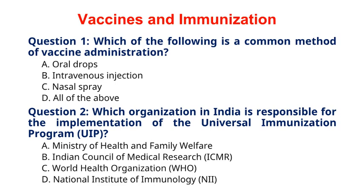Question 2. Which organization in India is responsible for the implementation of the Universal Immunization Programme, UIP? A. Ministry of Health and Family Welfare. B. Indian Council of Medical Research, ICMR. C. World Health Organization, WHO. D. National Institute of Immunology, NII. The correct answer to question 2 is option A, Ministry of Health and Family Welfare. The Ministry of Health and Family Welfare in India is responsible for implementing the Universal Immunization Programme, UIP, to provide vaccines against preventable diseases.